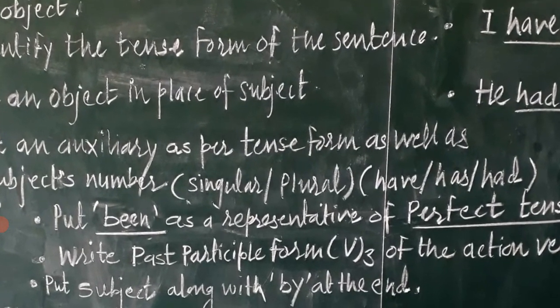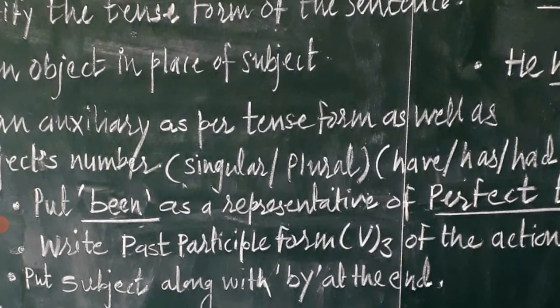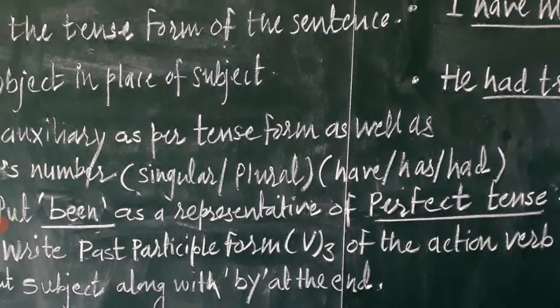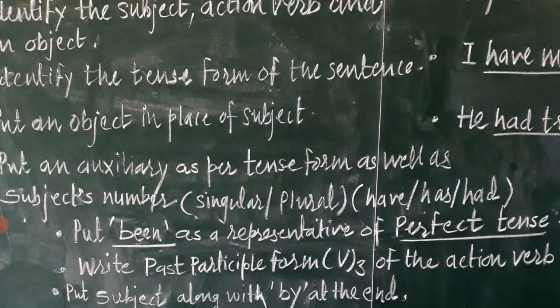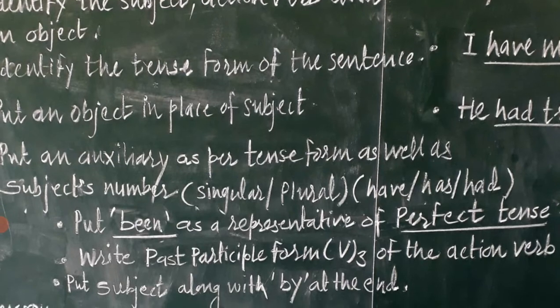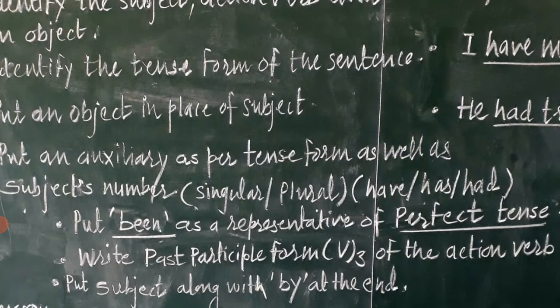A very important rule: put 'been' as a representative of perfect tense. Most students make the error of forgetting to put 'been' in the sentence. Why is 'been' introduced in perfect tense passive? Because the action verb is already in past participle form, and in passive construction we again require the action verb in past participle form — so the change is not identifiable until we put 'been' there. That's why 'been' is duly introduced. Next, write the past participle form — V3 — of the action verb, and lastly, put the subject along with 'by' at the end.